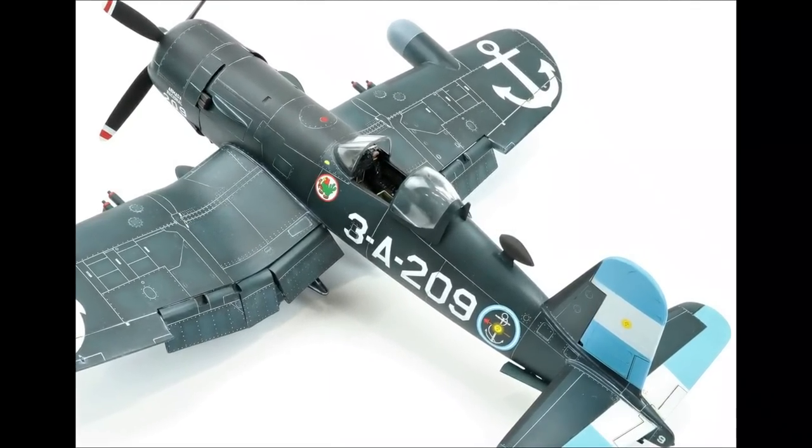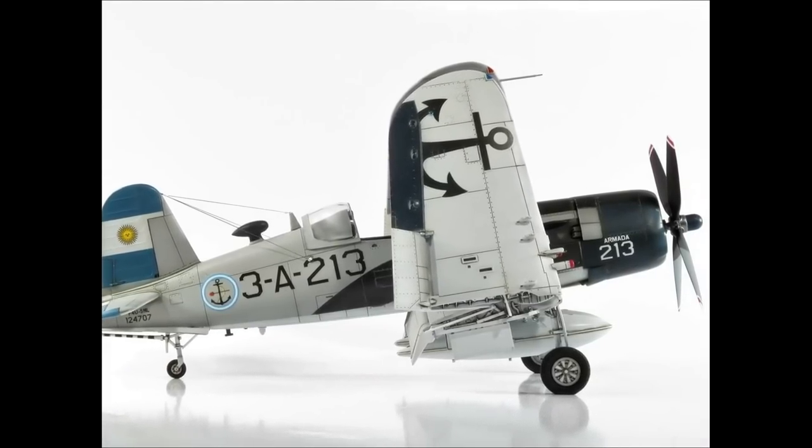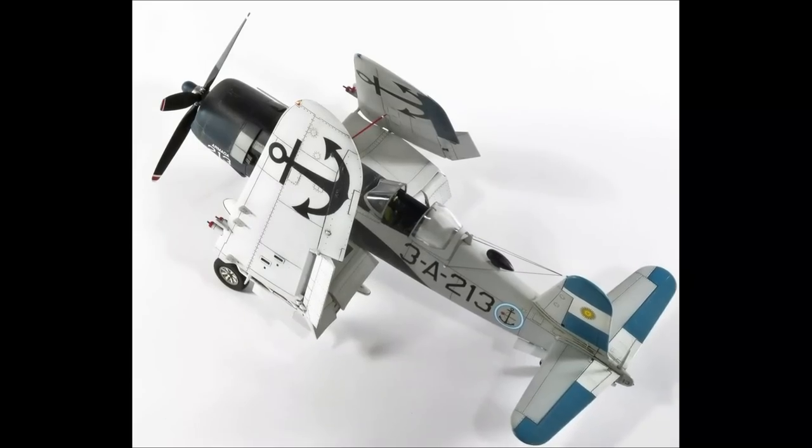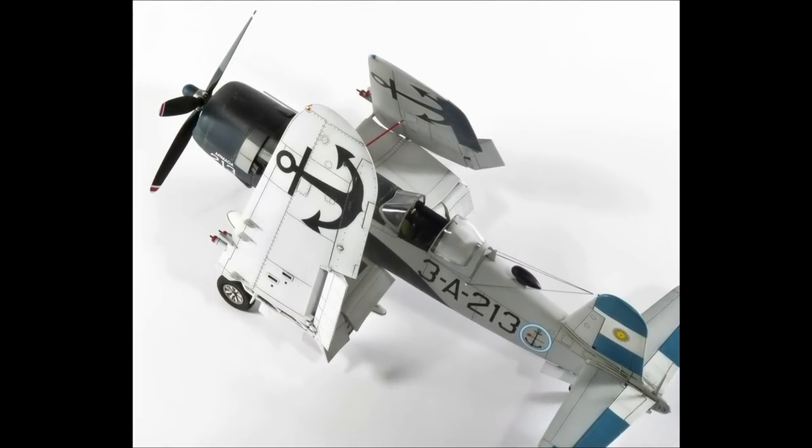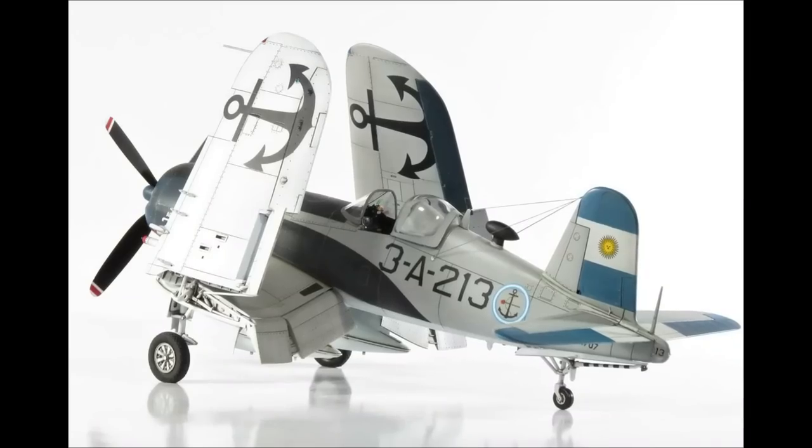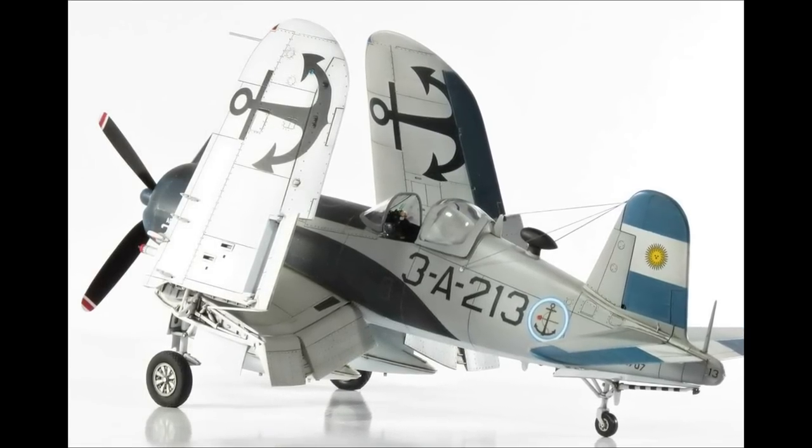I've built a couple of these kits in the past. Most recently, this F4U-5 finished in the markings of the Argentinian Armada. I folded the wings using the Wolfpack Resin Wing Fold Set. I really liked the way it turned out, and the gray Corsair was certainly unique. I wanted to build another one, but this time finishing it in the dark sea blue scheme.